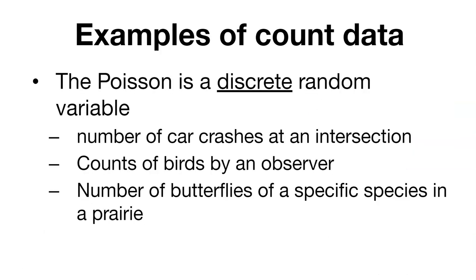What about some other examples of count data? This could be things like the number of car crashes at an intersection. This is a good example of one that's rare and independent, often a characteristic of Poisson data. A Poisson distribution is a discrete random variable often characterized by something happening rare and independently. Car crashes are not occurring every hour of every day, and each car crash we might think is independent of the last car crash.